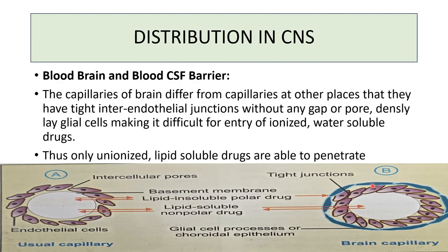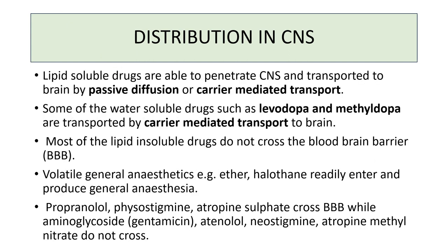Distribution of drugs in the CNS: the CNS has a blood-brain barrier where capillaries differ from other sites — they have tight endothelial junctions without gaps or pores, and are densely lined by glial cells, making it difficult for ionized or water-soluble drugs to enter. Only unionized, lipid-soluble drugs can cross the blood-brain barrier. Lipid-soluble drugs penetrate the CNS by passive diffusion or carrier-mediated transport. Some water-soluble drugs such as levodopa and methyldopa are transported by carrier-mediated proteins. Volatile general anesthetics like ether and halothane readily enter the CNS and produce general anesthesia.